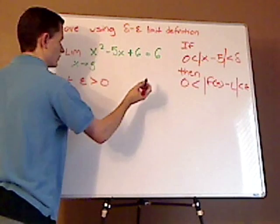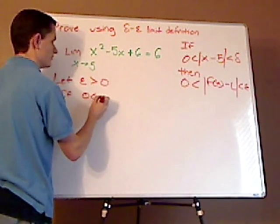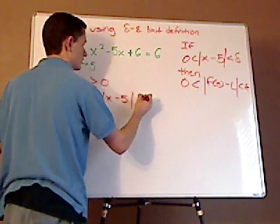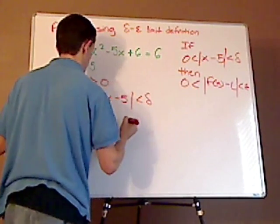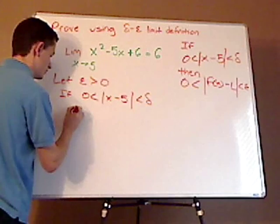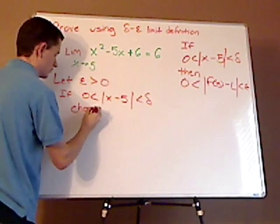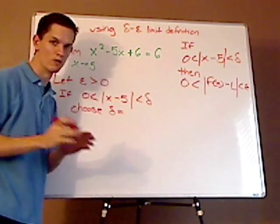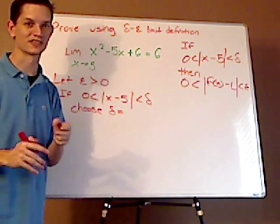If, and then we have the first part, that's our given: |x minus 5| less than delta. And then we're going to choose delta equaling something. And what we might have to do is actually pick two deltas.